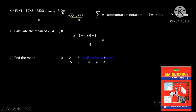The mean formula using frequency is: mean equals f1·x1 plus f2·x2 plus f3·x3, and so on up to fn·xn. In summation notation, mean equals the summation from i equals 1 to n of fi·xi, where fi is the frequency of item i and xi is the value of item i, divided by the total number of items.